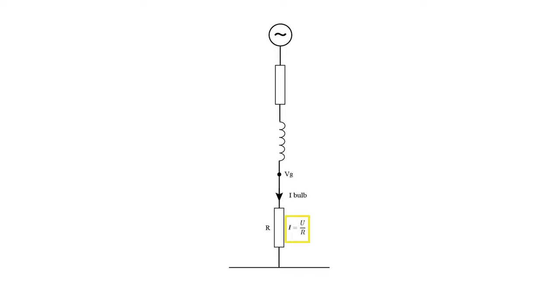Now consider that we are adding a linear load — a load that would normally not produce harmonics and would not normally be affected by harmonics. In the fourth picture, consider a light bulb added to our system next to the variable frequency drive. We can model this light bulb as a resistance — a simple resistor in parallel with the variable frequency drive. Since the current flowing to the resistor equals U divided by R (Ohm's law), if we have a distorted voltage we will also have a distorted current going into the light bulb.